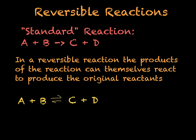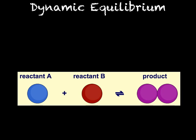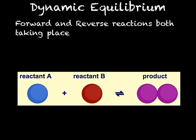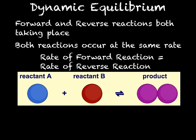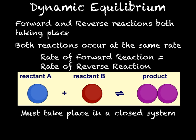All reversible reactions will reach something called dynamic equilibrium. When a reversible reaction reaches dynamic equilibrium, the amounts of reactants and products will reach a certain balance and stay there. The reactions are still taking place in both the forwards and the reverse direction, but the overall effect is zero because the reactions cancel each other out. This means that the reactions are taking place at exactly the same rate in both directions, so the rate of the forward reaction equals the rate of the reverse reaction. A reversible reaction will reach dynamic equilibrium providing it takes place in a closed system, meaning none of the reactants or products can escape.